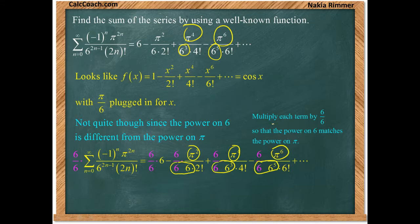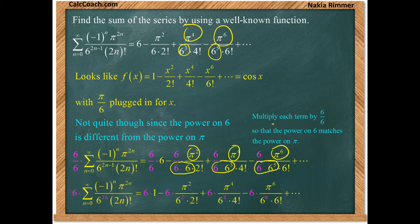So that's why we put that 6 underneath there. But you can't just put a 6 underneath without also putting one in the numerator. And now we make it swallow up and now the powers on pi and 6 both match.